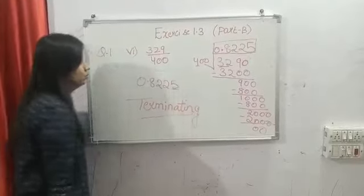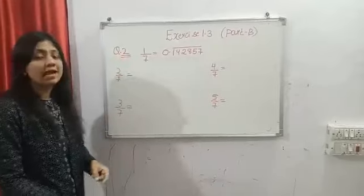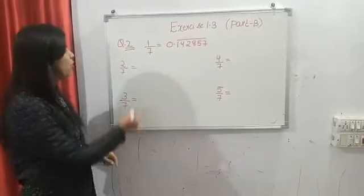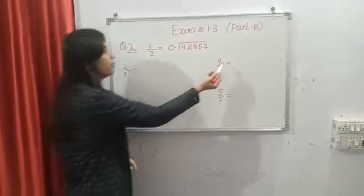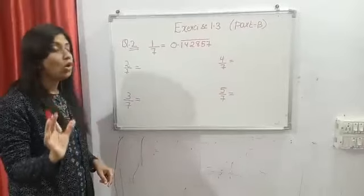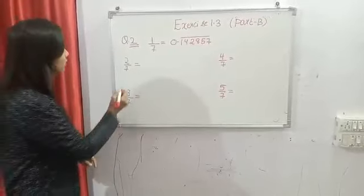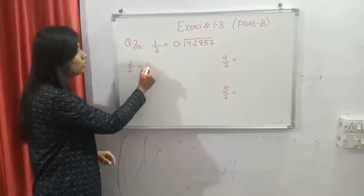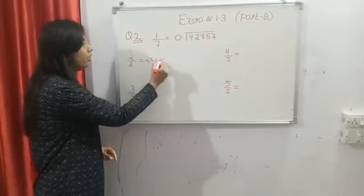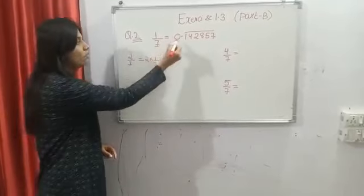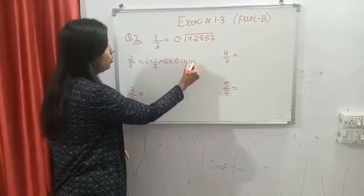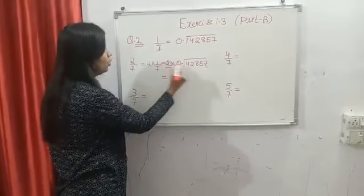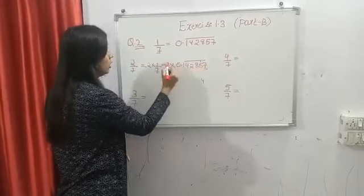Since the remainder is zero, this decimal representation is terminating. It is ending at 5. Now we will see question number 2. Question number 2 says that if the value of 1 by 7 is 0.142857 bar, then you have to find the value of 2 by 7, 3 by 7, 4 by 7, and 5 by 7 without doing long division. You can say 2 by 7 is equal to 2 multiplied by 1 by 7, and you already know the value of 1 by 7 is 0.142857 bar.